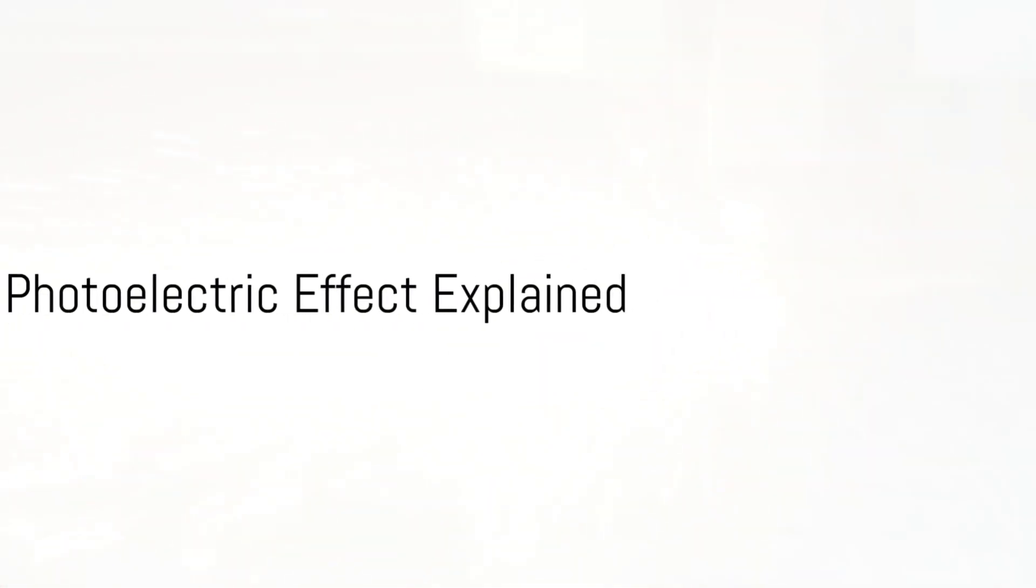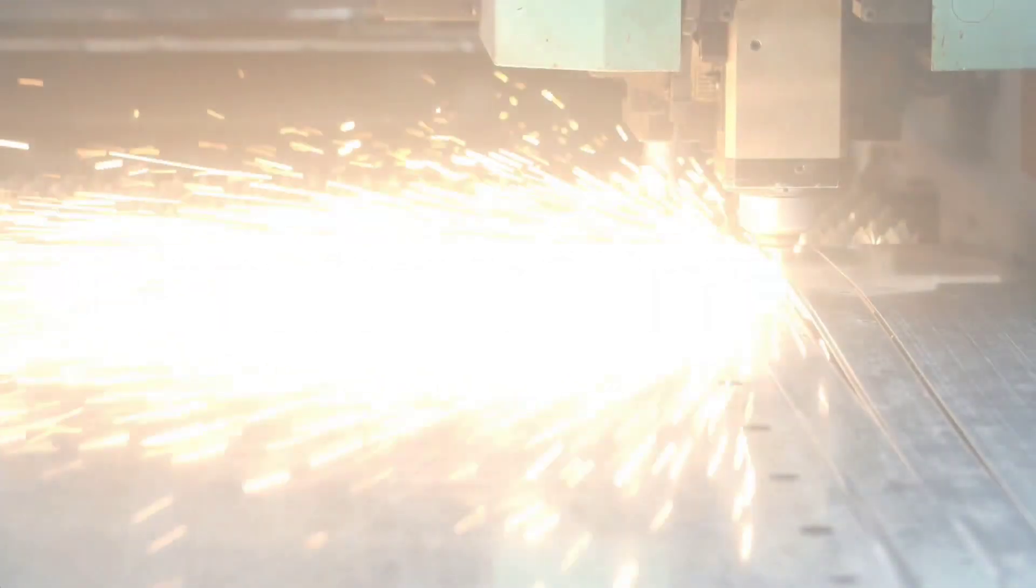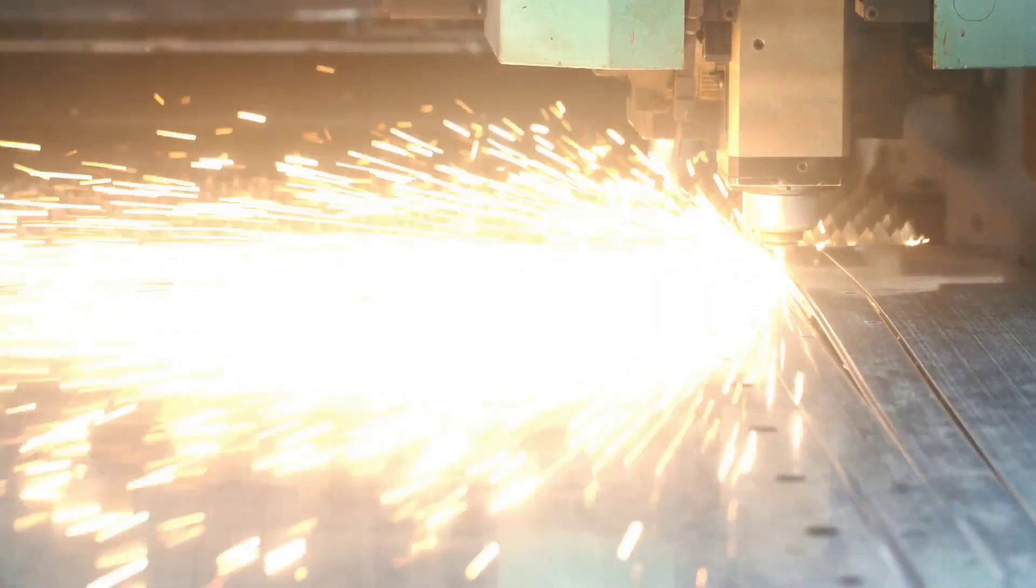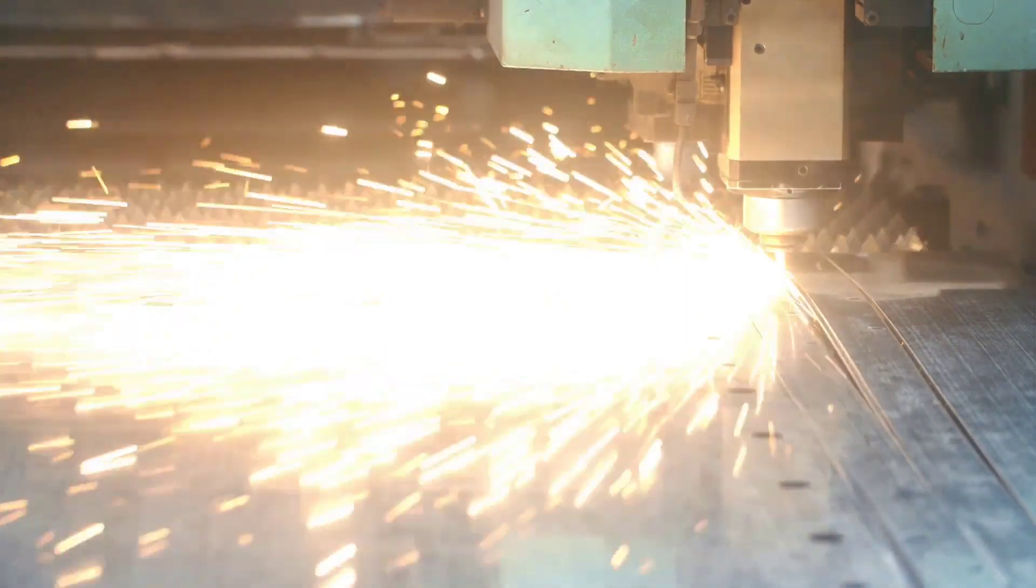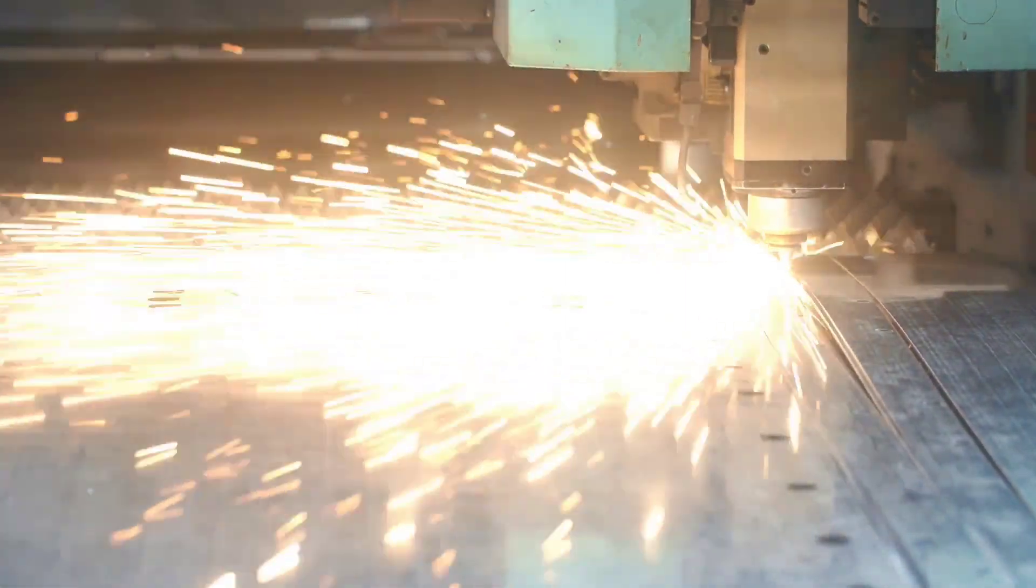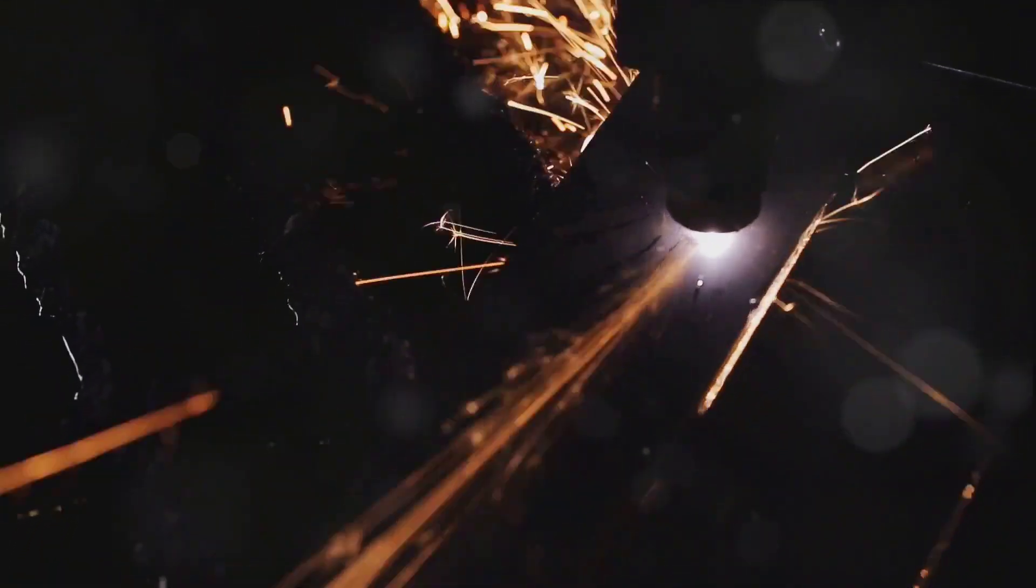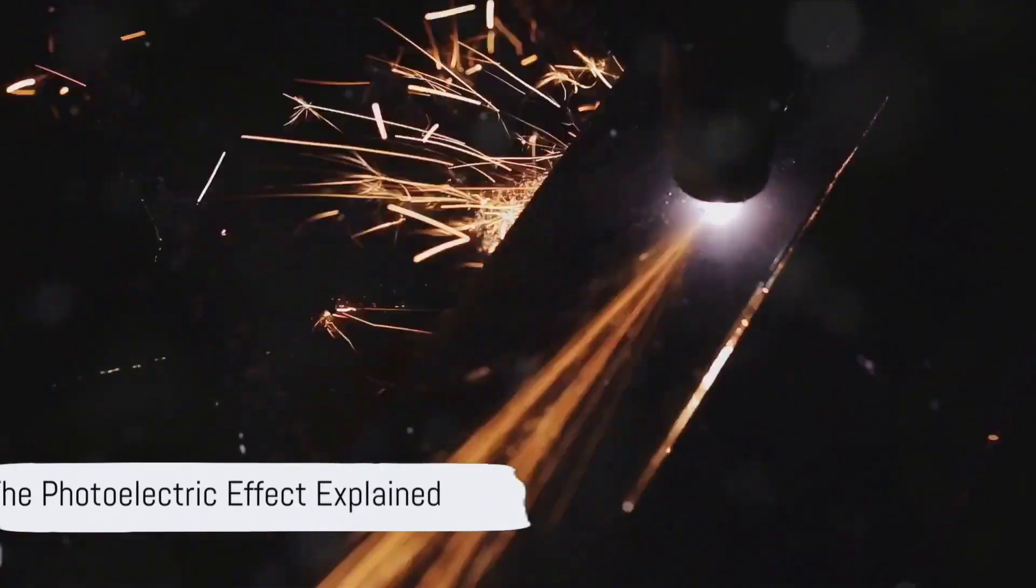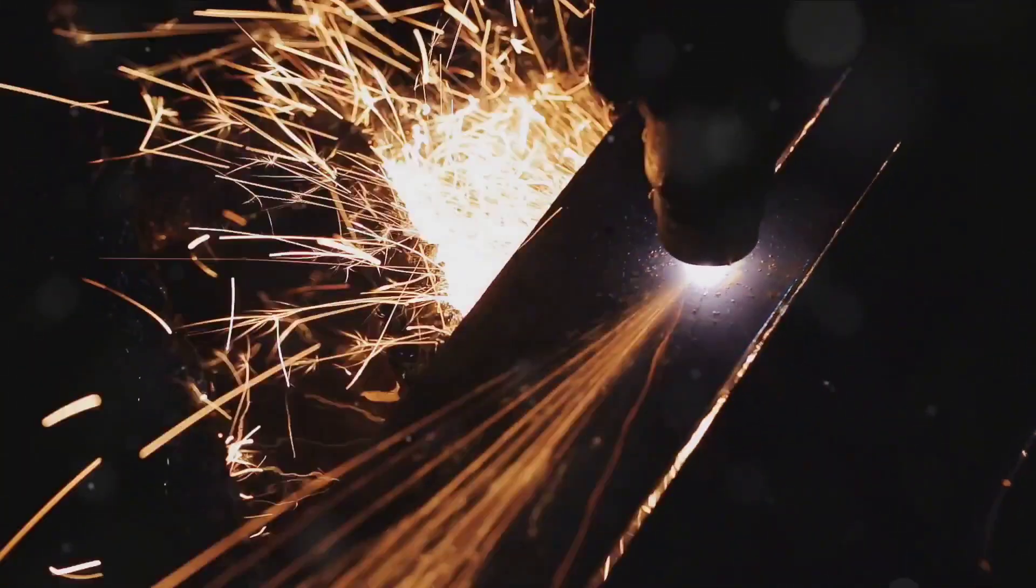Imagine, if you will, a metal surface being hit by light. When this happens, something rather intriguing occurs. The light, if it carries enough energy, can actually knock electrons loose from the metal. This phenomenon, my friends, is known as the photoelectric effect.